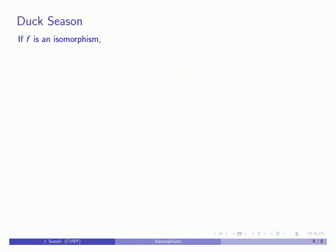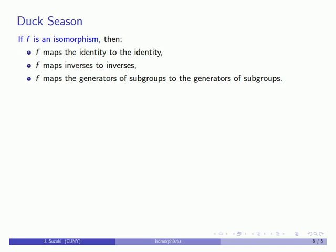All right, so let's open up duck season. If I have an isomorphism, then we've determined three useful things about it. First, F has to map the identity to the identity. Second, F has to map inverses to inverses. And third, F has to map the generator of a subgroup to the generator of a subgroup.